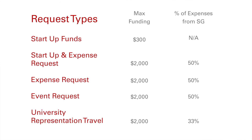If multiple organizations are hosting the same event, they should submit a single event request listing both organization names. Across all of the requests, the maximum funding that can be requested from student government is $2,000.